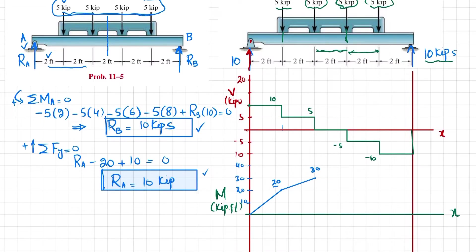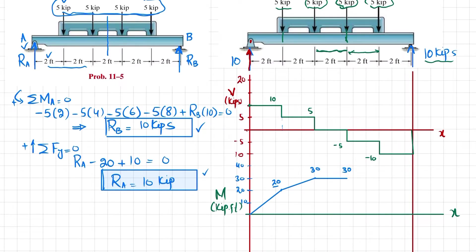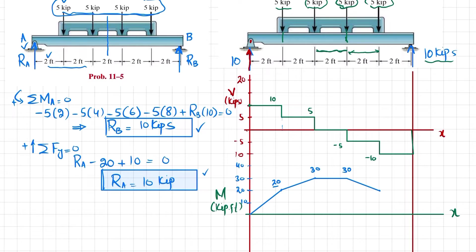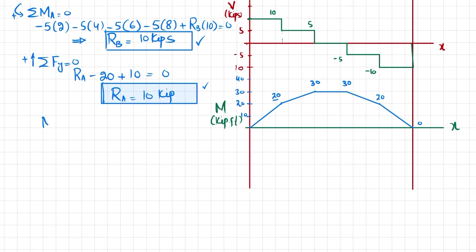From 4 to 6 feet the shear is zero, so the bending moment stays constant at 30 kip-ft. At 6 feet, the area is −5 × 2 = −10 kip-ft, so the bending moment drops to 20 kip-ft at 8 feet with a downward slope. The last area is −10 × 2 = −20 kip-ft, so from 20 kip-ft it drops to 0 at 10 feet, confirming the diagram closes correctly.